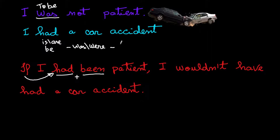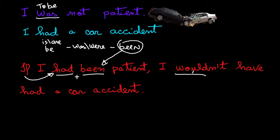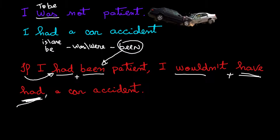Then we have the past participle of the verb 'to be,' which is 'been.' So: if I had been patient — but I wasn't. Since it's negative: I wouldn't have had a car accident. Notice we say 'have had' — that's the past participle form of 'have.' So the full sentence: I wouldn't have had a car accident if I had been patient. Repeating 'have had' is no problem.